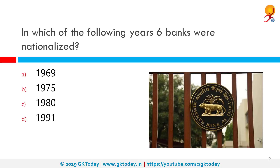In which of the following years were six banks nationalized? The correct answer is 1980. RBI was nationalized in 1949, SBI was nationalized in 1955, 14 banks were nationalized on 16th of July 1969, whereas six banks were nationalized on 15th of April 1980.